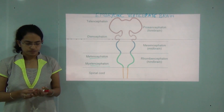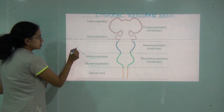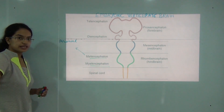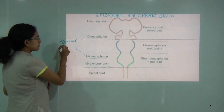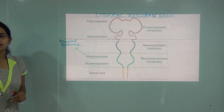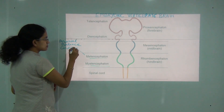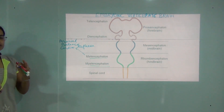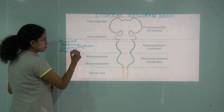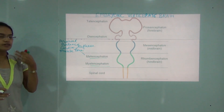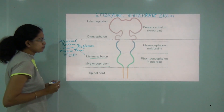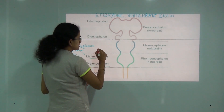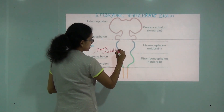Metencephalon controls the following functions: arousal, balancing the body, cardiac reflexes, fine muscle-tone movements, and sleep patterns. These are controlled under metencephalon. As already seen, metencephalon converts into pons and cerebellum in an adult brain.